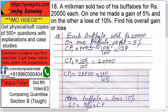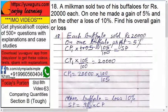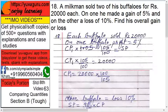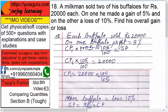Each buffalo was sold for rupees 20,000. For the first buffalo, profit equals 5%. Now, how do we find the cost price? If I bought something for 100 rupees with a 5% profit, I'd sell it for 105. So: CP1 × 105/100 = SP of one buffalo. Understand this point very carefully.